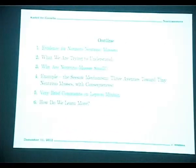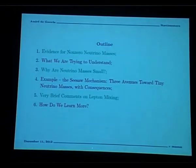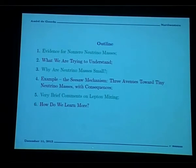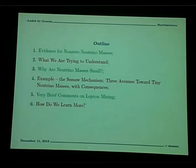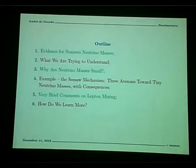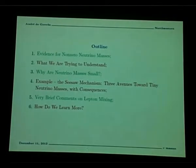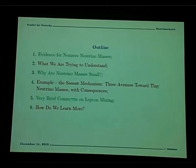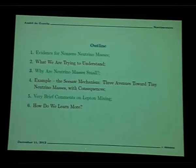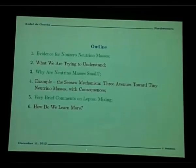Then I will quickly jump into trying to define what it is we're trying to understand from a theoretical point of view, and I'll try to convince you that neutrino masses are interesting. The biggest question is why neutrino masses are very small as opposed to not so small or zero. I'll explain why that's an interesting question with lots of consequences by discussing one example in detail. Depending on time, I might also comment on lepton mixing, and then I'll conclude with a wish list for learning more about neutrino masses.